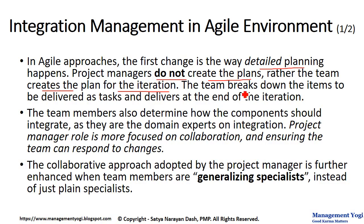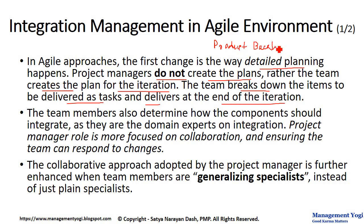The team also breaks down the items to be delivered as tasks and delivers them at the end of the iteration. All the items you are going to deliver in a project are basically part of a log file called a backlog, known as the Product Backlog. The team will take items from the Product Backlog, determine what they can deliver in an iteration, provide the planning, break items into individual tasks, and deliver the deliverable at the end of the iteration.